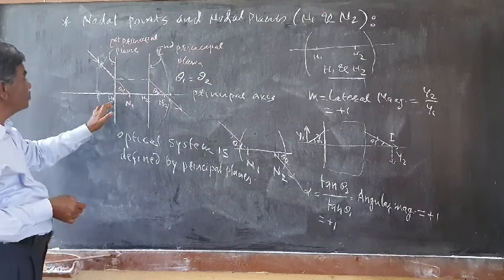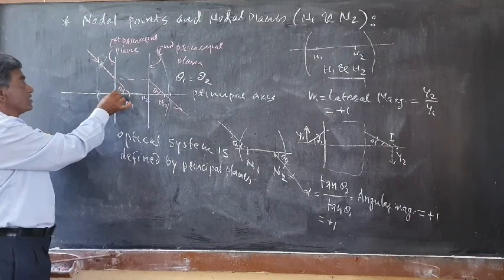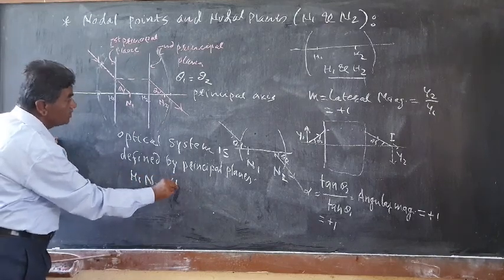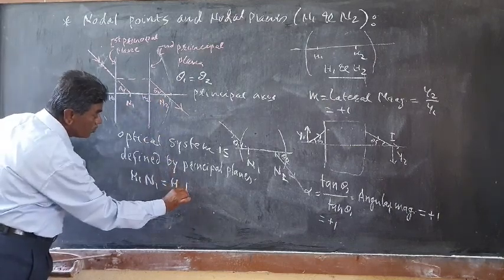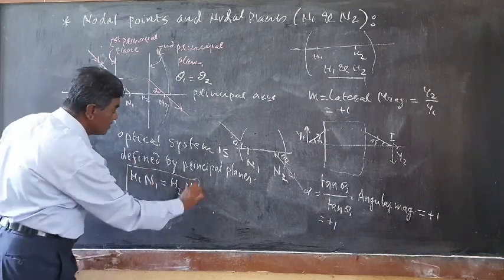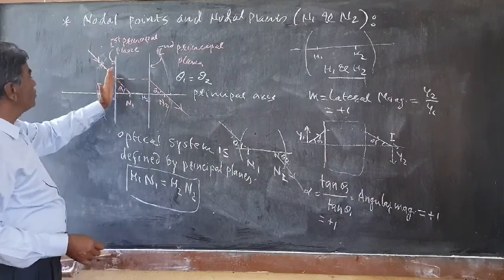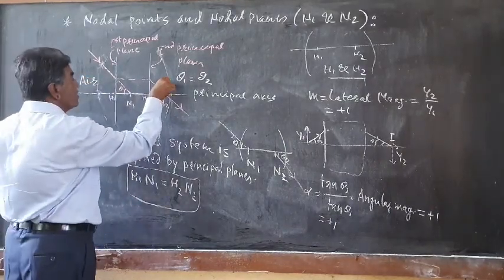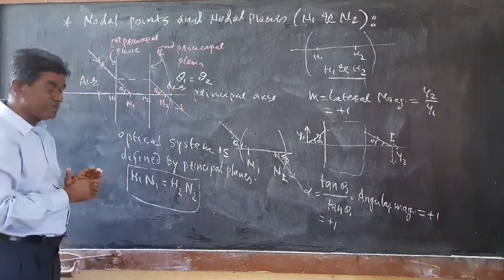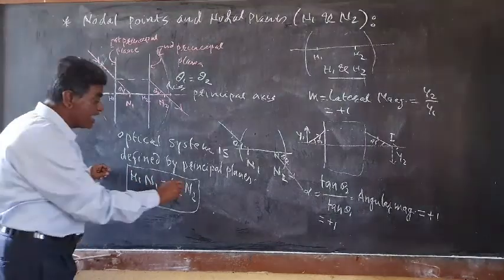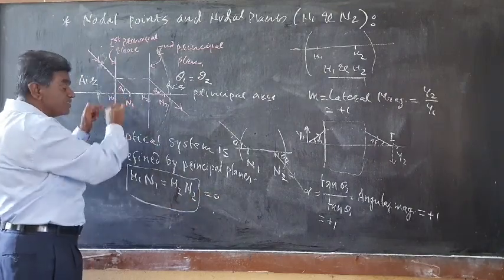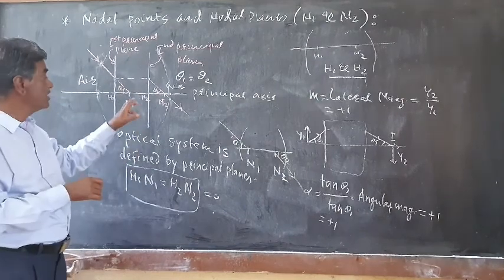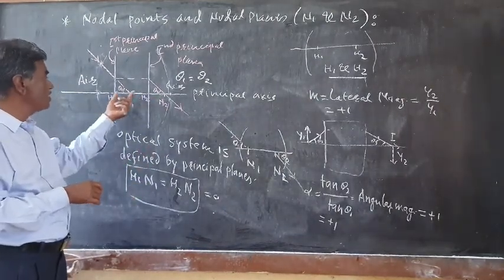It is also seen that the distance H1 to N1 must always equal the distance H2 to N2. This is one of the properties of the cardinal points: when the medium on both sides of the optical system is the same, H1N1 equals H2N2. Also, the distance between H1 and N1 is always equal to the distance between H2 and N2.